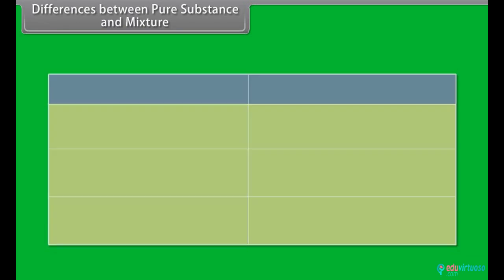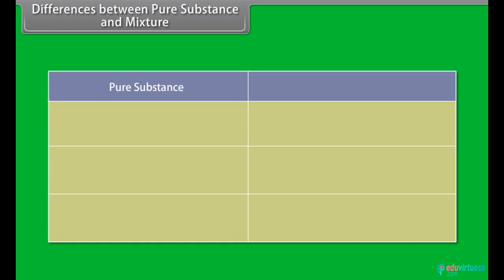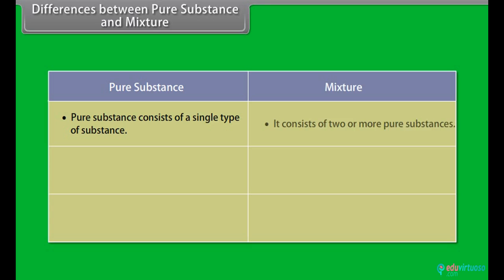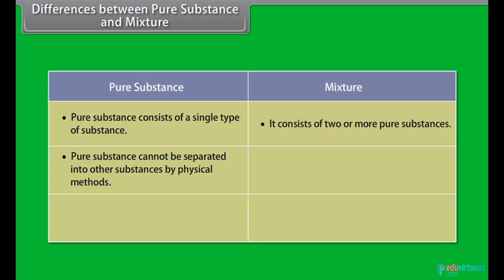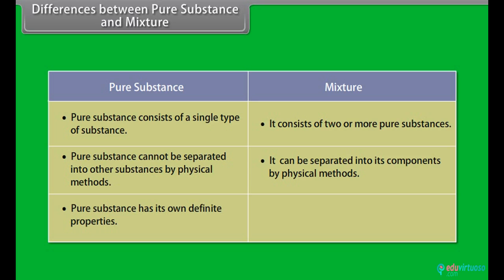Differences between pure substances and mixtures: A pure substance consists of a single type of substance, whereas mixtures consist of two or more pure substances. A pure substance cannot be separated into other substances by physical methods, but mixtures can be separated into their components by physical methods. A pure substance has its own definite properties, whereas a mixture shows the properties of its components.